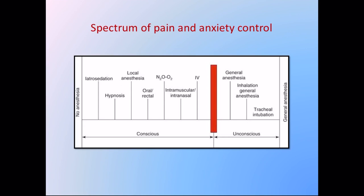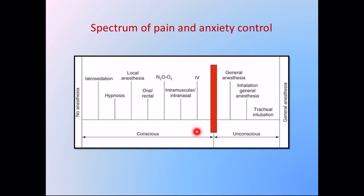On the spectrum of pain and anxiety control, conscious sedation agents include iatral sedation, hypnosis, local anesthesia, oral or rectal sedation, and nitrous oxide, whereas methods such as general anesthesia and tracheal intubation fall on the unconscious side of the spectrum.